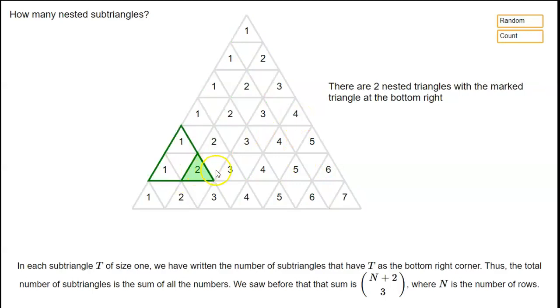So in each of these triangles here we've written the number of possible triangles that have this small triangle as the bottom right corner. So that means that the total number of possible nested triangles is just going to be the sum of all the numbers that we've written in this diagram.